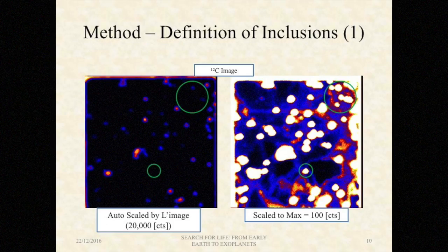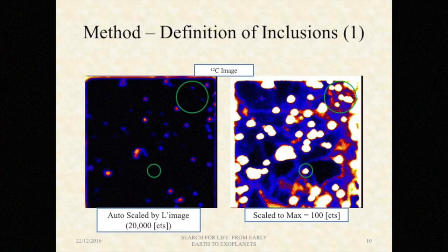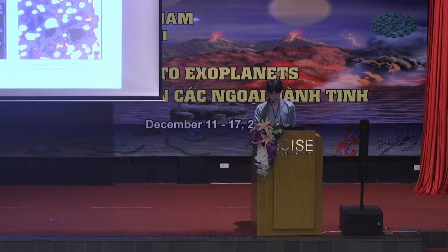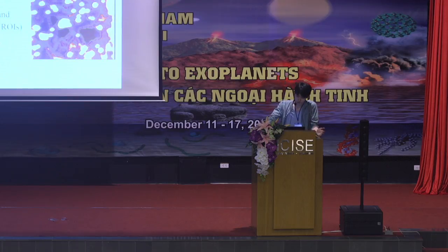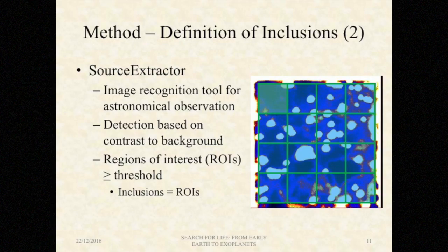What do I mean by a possible suppression of human selection bias? If you look at these two images, they are actually exactly the same image — the one on the left is full scale, and the one on the right is scaled to very low count. If you are trying to look for inclusions by hand, the chances are you will be missing some of the inclusions, which are supposed to be there in the green circles, causing selection bias. So we used a tool called Source Extractor, which is an image recognition tool for astronomical observation, but generic enough that it has already seen use in many sciences such as neuroscience and biology.